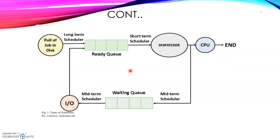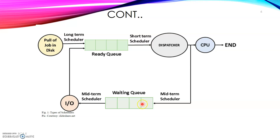Looking at this figure, we have the ready queue which contains processes ready to execute and ready to take over the CPU. The waiting queue contains all processes that need input or output operations. A process goes to the ready queue, then it runs, and if it requires I/O it waits in the waiting queue. After completion of that I/O operation it goes back to the ready queue.